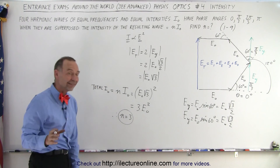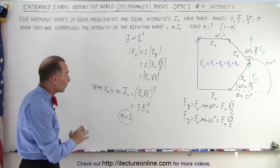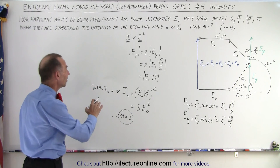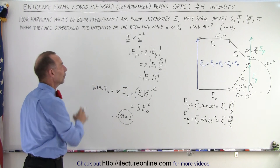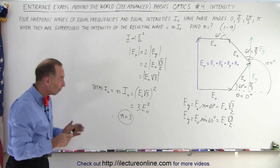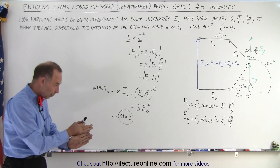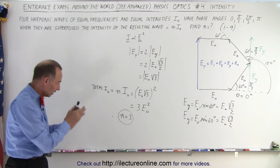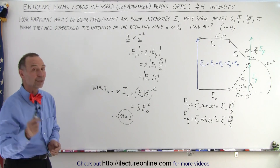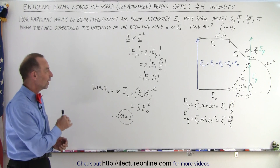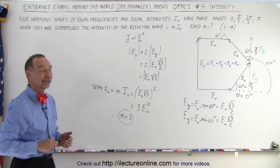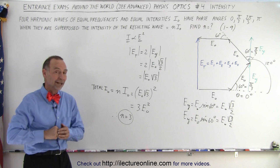Therefore, the intensity of all four superposed waves is 3 times the intensity of a single wave — N equals 3. This is how we figure that out.